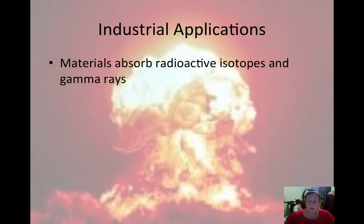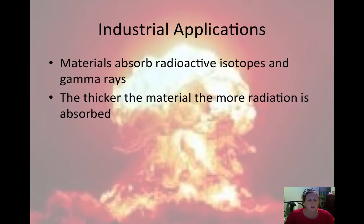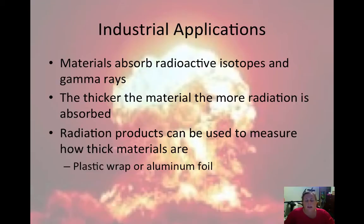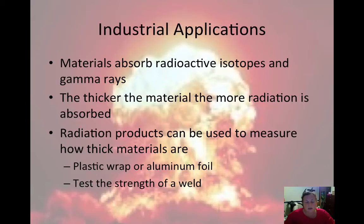Industrial applications are where radioisotopes can be used in industry. Materials absorb radioactive isotopes and gamma rays — the thicker the material, the more radiation is absorbed. Radiation can be used to measure how thick materials are. Plastic wrap and aluminum foil are examples of products tested this way, and radiation is also used to test the strength of a weld.